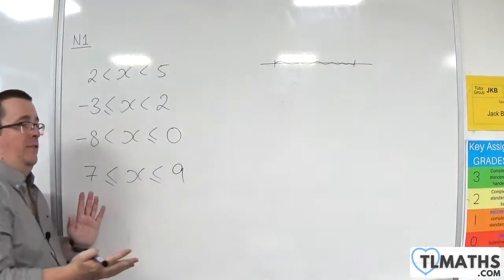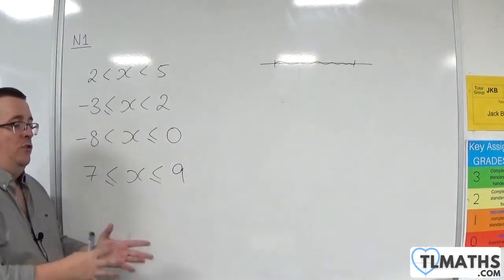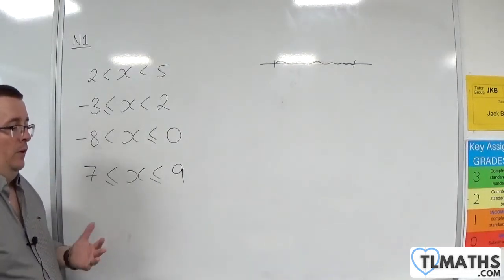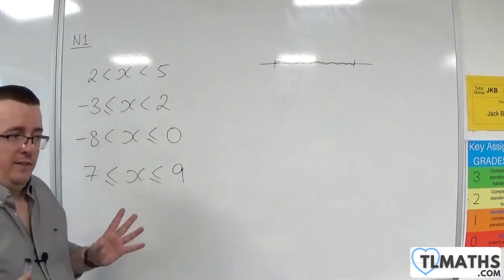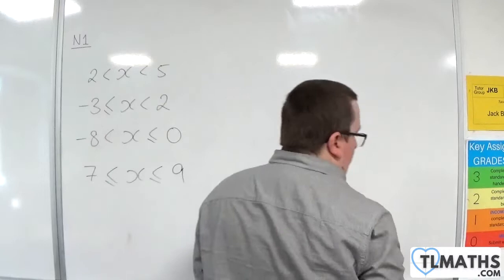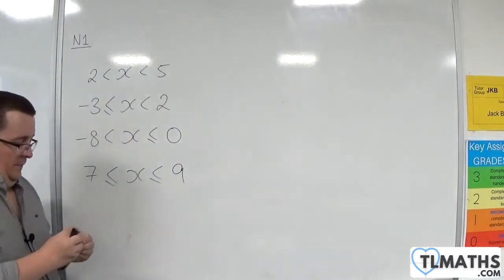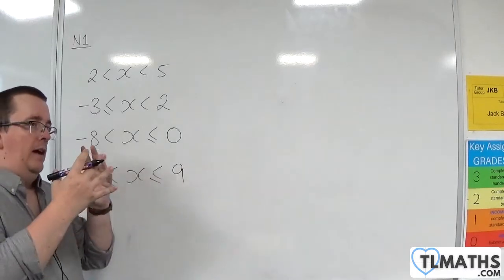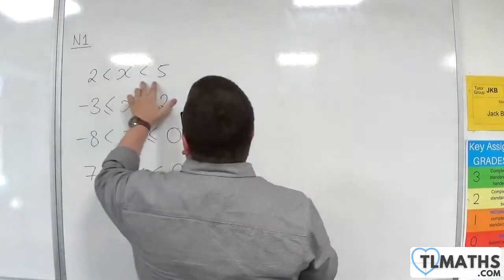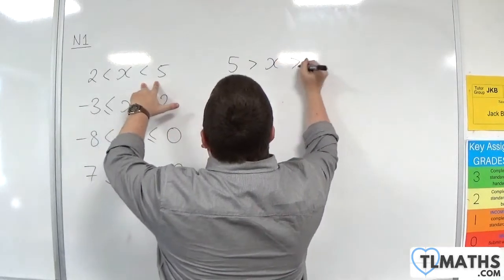Now, why do they have to be written that way? Well, that's because it doesn't really make sense for the other ways of writing them. So let's go through some possible variations. A number of students think, well, I could write that one as 5 is greater than x is greater than 2.